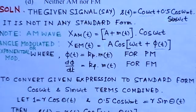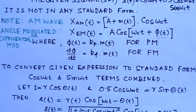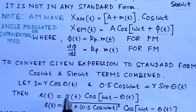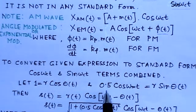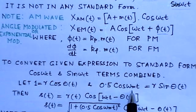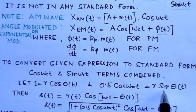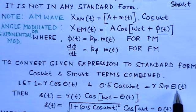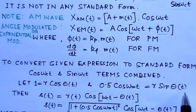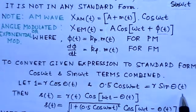Let 1 = r·cos(θ(t)) and 0.5·cos(ω_m·t) corresponds to r·sin(θ(t)). And θ is not a constant angle, it is an angle which varies with time.